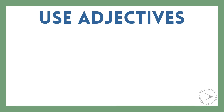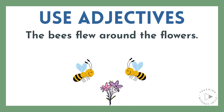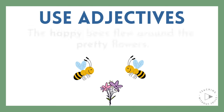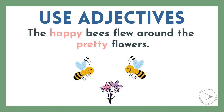So how can you use adjectives? Listen to this boring sentence: the bees flew around the flowers. How can you add some describing words to this sentence to make it more detailed and interesting? Pause here to think, or keep watching. There are many ways you could add adjectives. You might say, the two bees flew around the colorful flowers. Or maybe, the happy bees flew around the pretty flowers.